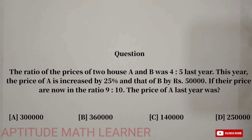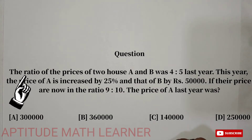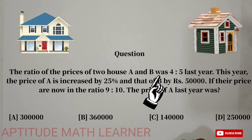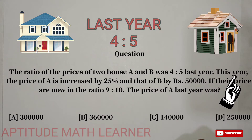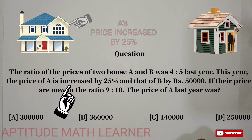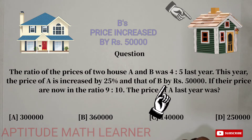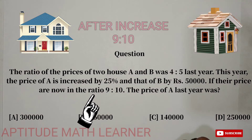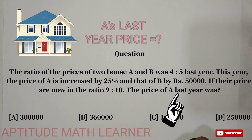Hello and welcome to our YouTube channel Aptitude Math Learner. Today we have a very interesting question: the ratio of the price of two houses A and B was 4:5 last year. This year the price of A increased by 25 percent and that of B by rupees 50,000. If their prices are now in the ratio 9:10, the price of A last year was?